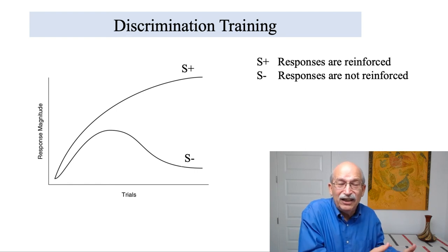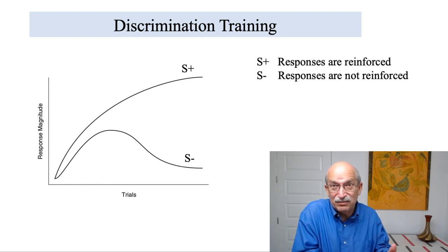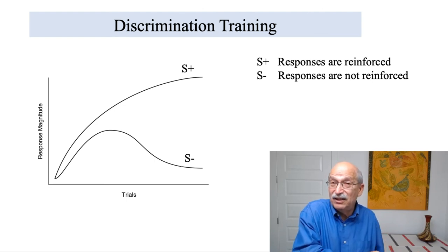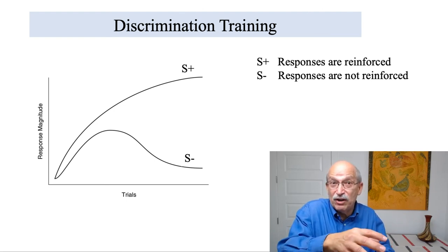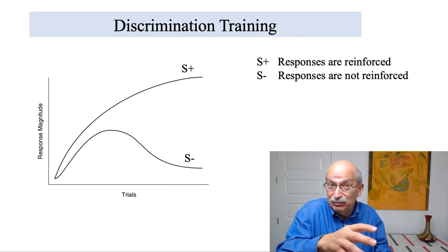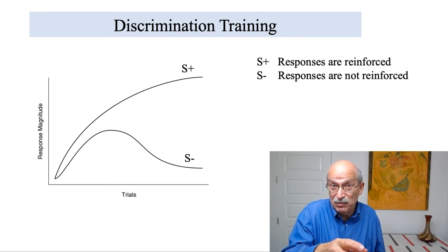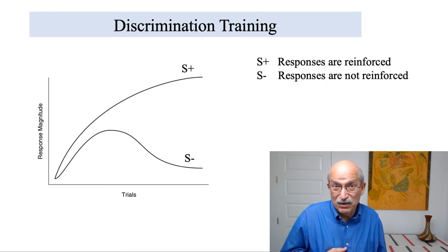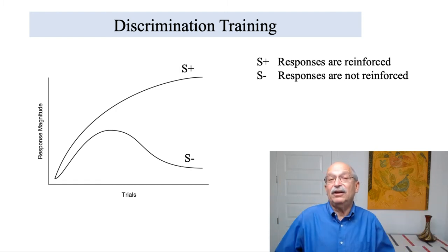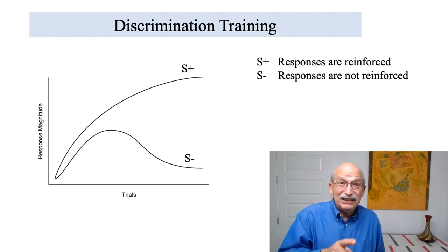Early during acquisition with a discrimination procedure, the subject responds more and more, but to both S-plus and S-minus. With continued non-reinforcement of the S-minus, responding to it drops out, and at the end you get a large discrimination. So that's discrimination training.